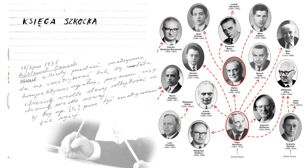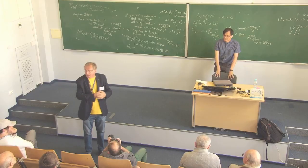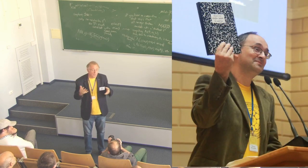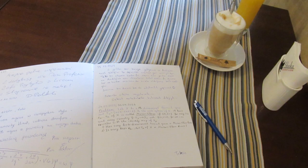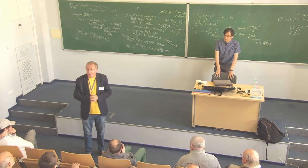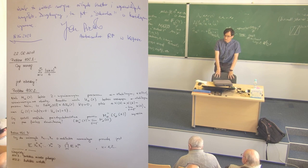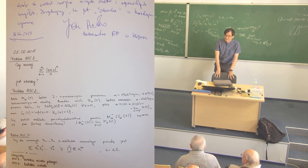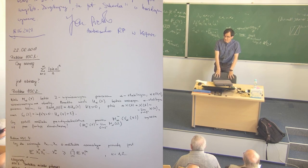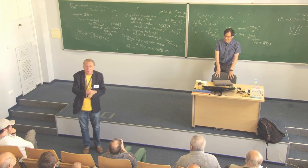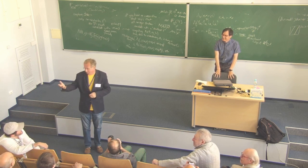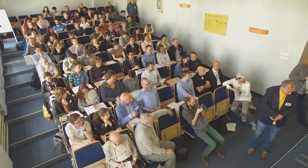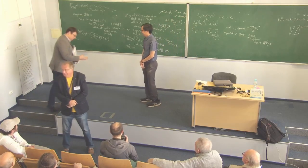A few years ago, a new project was initiated: the New Scottish Book, a collection of open problems — some written down in the Scottish Café and repeated on MathOverflow. One of these problems was formulated by Michael Baltzerik, who is here, and this problem was solved by Professor Terence Tao. According to tradition, a bottle of honey was promised as the award. Congratulations, and thank you for the solution!